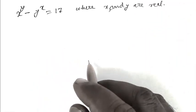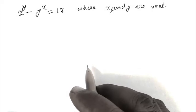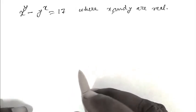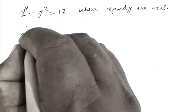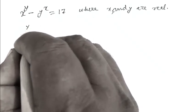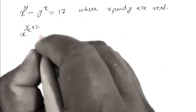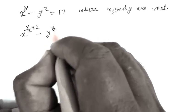Let's start. Before we start, don't forget to subscribe to my channel. We can write x to the power y upon 2, multiplied by 2, minus y to the power x upon 2, multiplied by 2, equals 17.